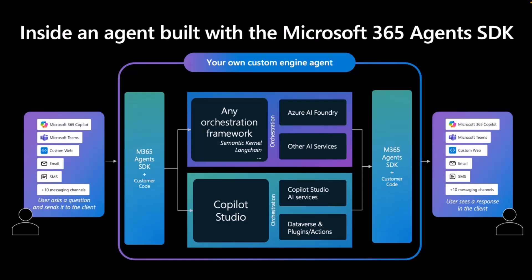After you bring any AI services and models you require, you can also utilize Azure AI for your data sources. Azure AI Search is a really popular RAG resource you can use with AI agents. At the end of designing your agent using an orchestration framework plus Azure AI services, the way to connect this agent to other channels — especially if you want to test it in Microsoft 365 Copilot — is by utilizing the Agents SDK.